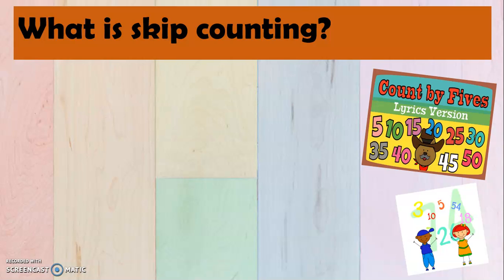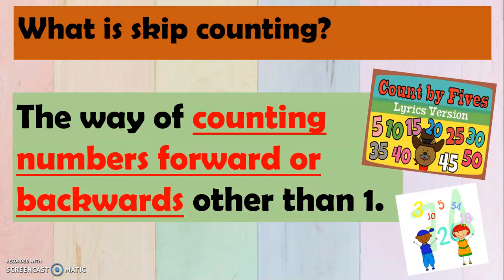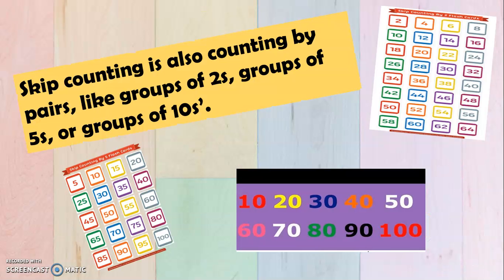Now, my dear grade 1, let us define first what is skip counting. Skip counting is the way of counting numbers forward or backwards other than 1. Skip counting is also counting by pairs, like groups of 2s, groups of 5s, or groups of 10s.